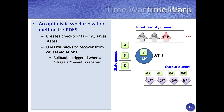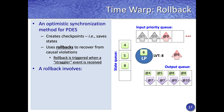Now assume we receive an event at a lower timestamp than 8 — this is called a straggler event. When a straggler event is received, it triggers rollback operations. For example, the event at time 6 is less than the local virtual time of 8, triggering a rollback. There are three steps involved in this rollback.